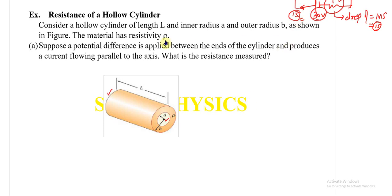The current is flowing parallel to the axis. We need to calculate the resistance. As we already know, for calculating resistance we use R = ρL/A. The resistivity is the same everywhere, the length is the same everywhere, and we need to identify the correct area through which current flows.